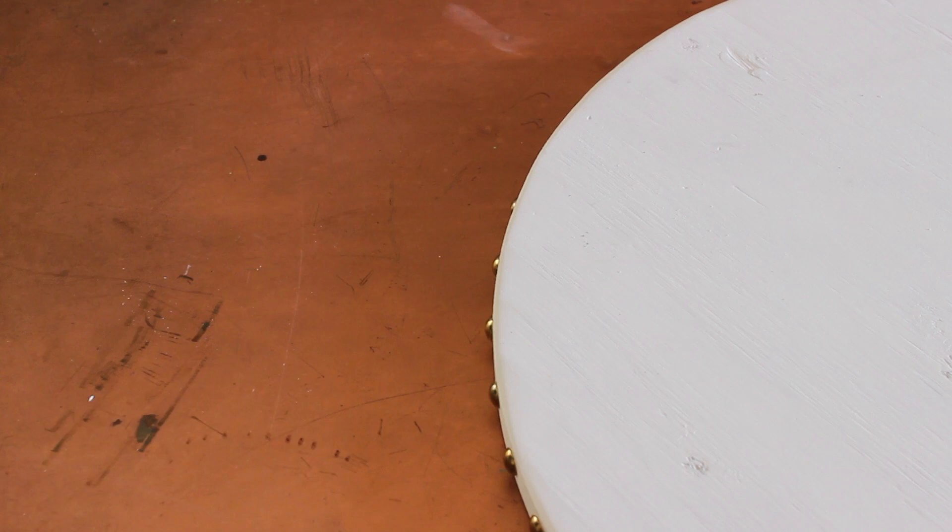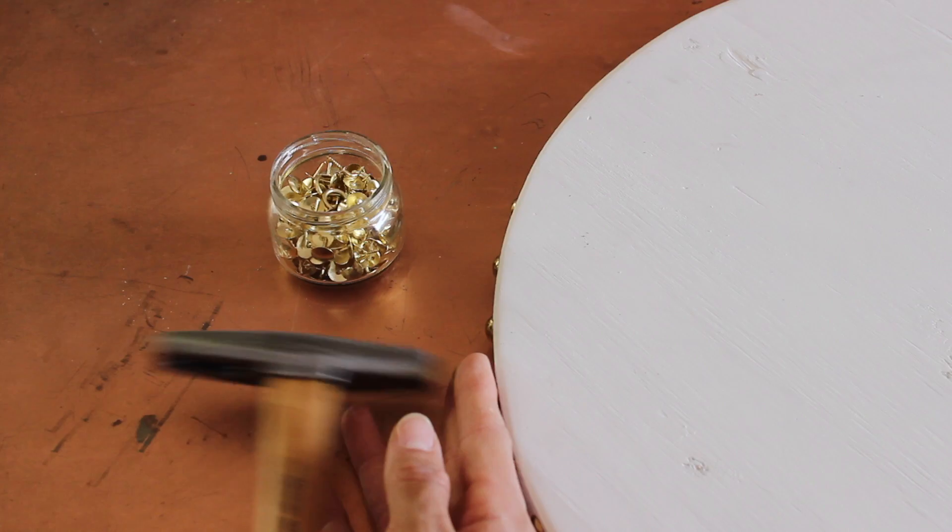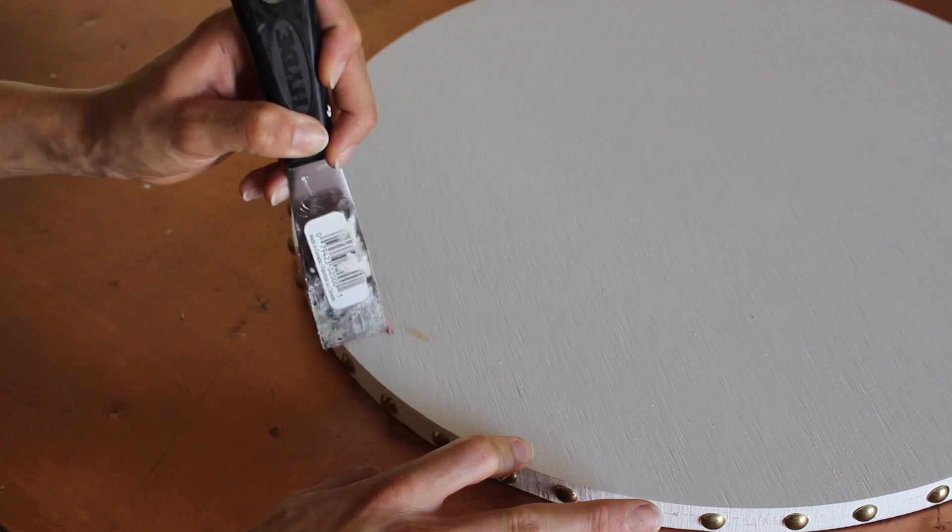To add the studs, all you're going to need are some push pins and a hammer and you're going to just hammer them into the side at your discretion with the spacing until your heart's content. And you can do it all the way around or partial, it doesn't really matter. If you have any big dents that you can't avoid, just add some wood putty, let it dry, and then paint over it.